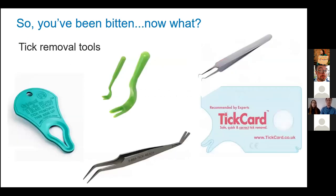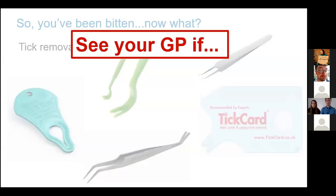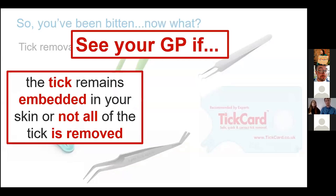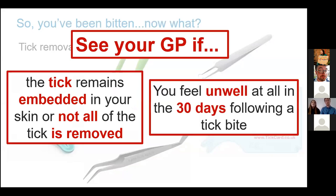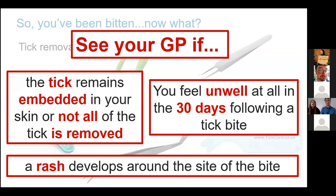There are quite a few tick removal tools. You can use regular tweezers if you're in a bit of a pinch, but we prefer using things like the tick card or the specialised twisty ones for your pets. They're a lot better because they're designed to help gently remove the tick to minimise the chance of the head being detached from the body. See your GP especially if when you've removed the tick there's part of it which still remains in the skin, as that also increases the likelihood of an infection. And if you feel unwell at all in the 30 days following a tick bite, in particular if you develop a rash around the bite site.